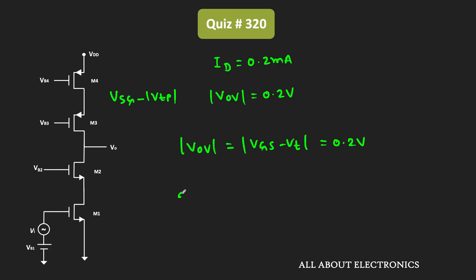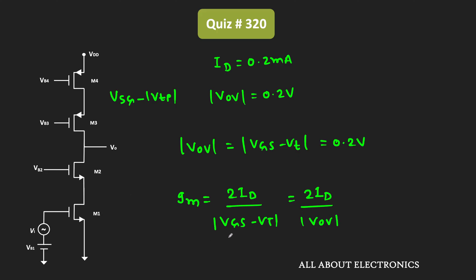As you know, the transconductance GM can be given as 2 times ID divided by VGS − VT, or equivalently 2 times ID divided by the overdrive voltage. So in this case, for all transistors the transconductance will be equal: 2 × 0.2 mA divided by 0.2 V, which equals 2 mA/V. That means GM1, GM2, GM3, and GM4 are all equal to 2 mA/V.